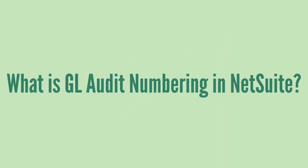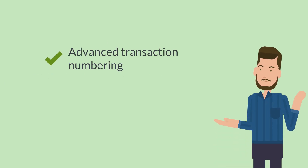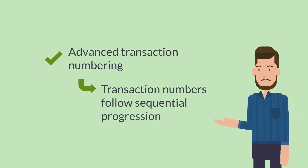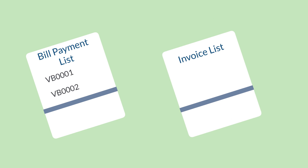First, we need to understand what GL Audit Numbering is. Many companies that use NetSuite will set up advanced transaction numbering. When this numbering is set up in an account, the numbering for each transaction type progresses sequentially based on the rules you create. For example, the first bill payment recorded in your account might be numbered something like VB0001, while the second would be VB0002, and so on. Other posting transactions, like invoices, would similarly be numbered in sequence.